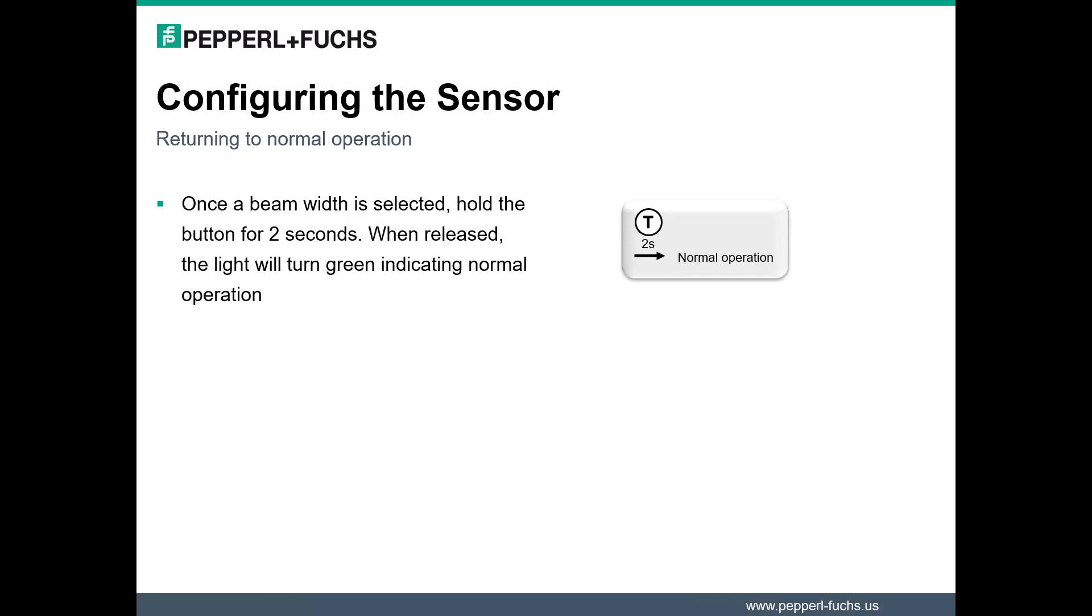After you have selected your beam width, hold the button for two more seconds. When it is released, the light will turn green indicating normal operation.